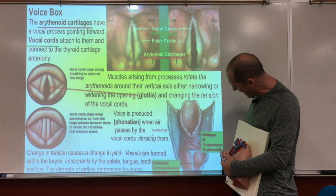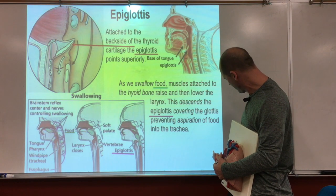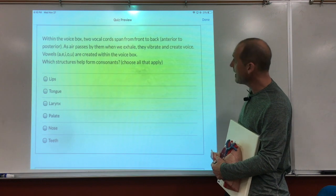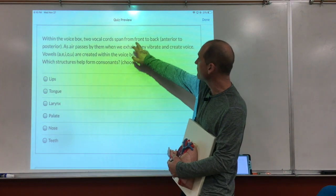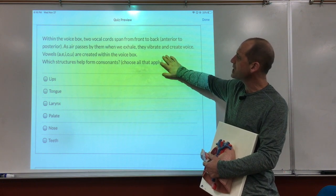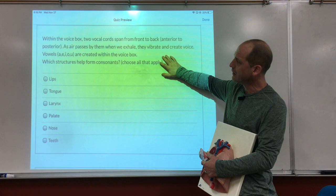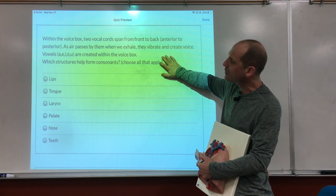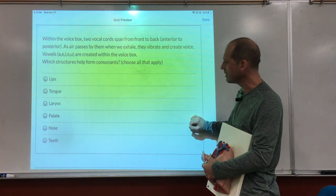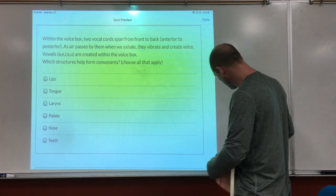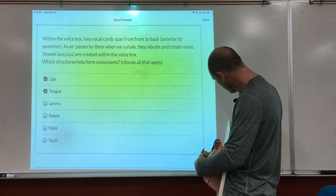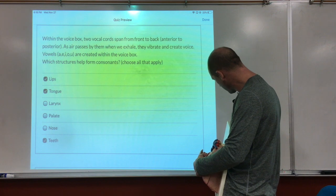Then there's also the epiglottis. Within the voice box, two vocal cords run anterior to posterior. As air passes by when we exhale, they vibrate and produce voice. Vowels — A, E, I, O, U — are created within the voice box. Which structures help form consonants? The lips, tongue, teeth, and palate.